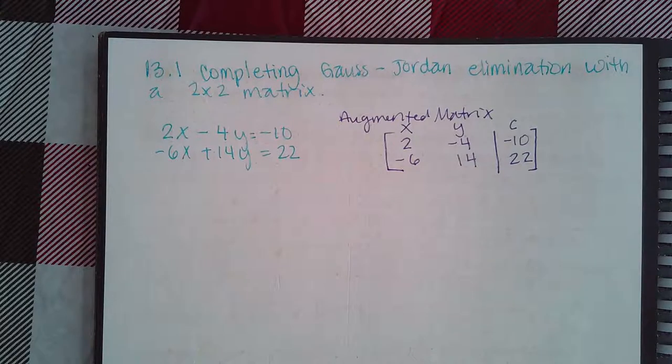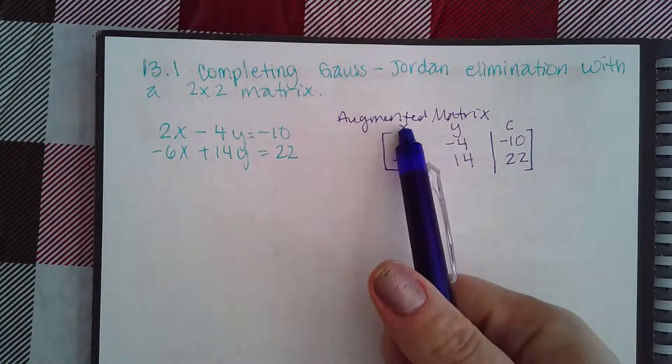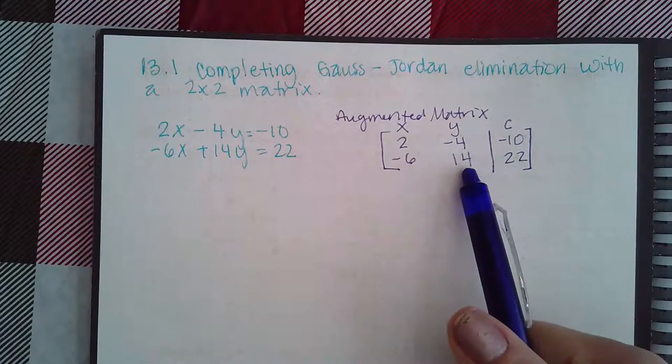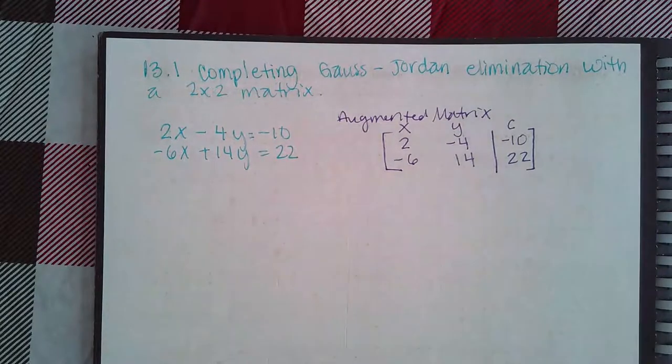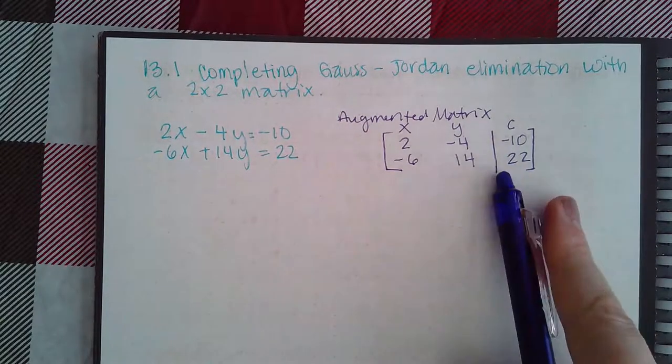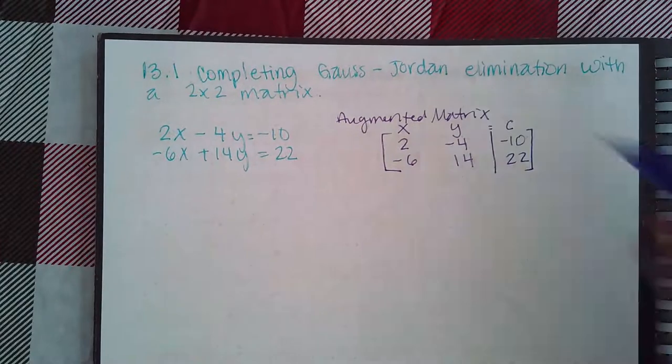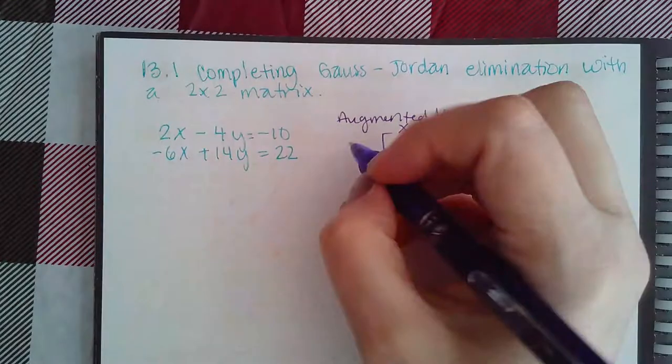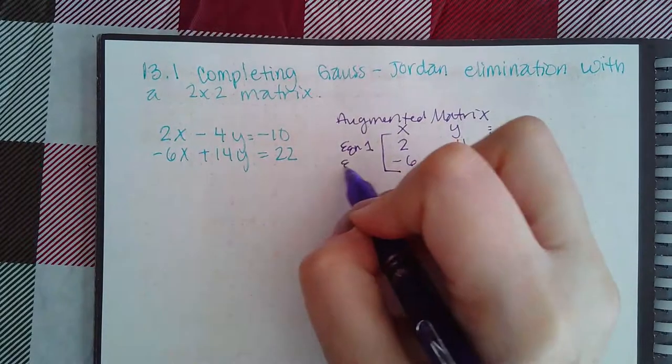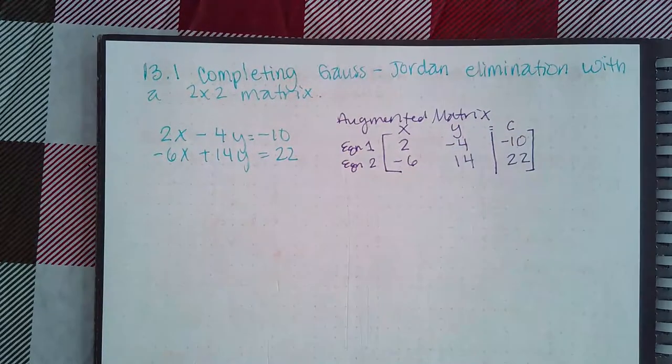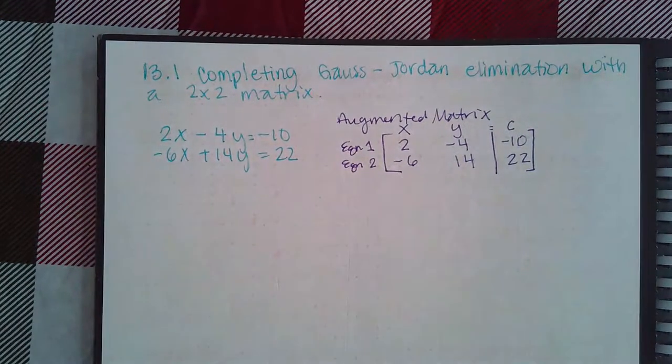Now, notice that there's no variables in here, but this does represent the coefficient of the variable x. This represents the coefficient of y. And then these represent the constants to the right of the equal sign. This little bar is the equal sign. And you always have to remember that the top row is equation 1, and the bottom row is equation 2. That's how you write an augmented matrix.